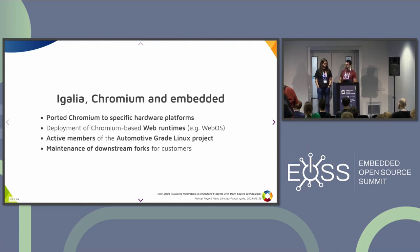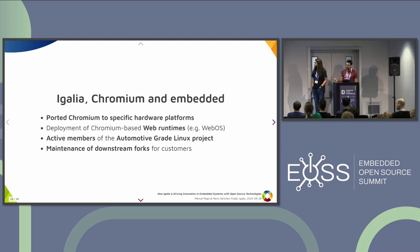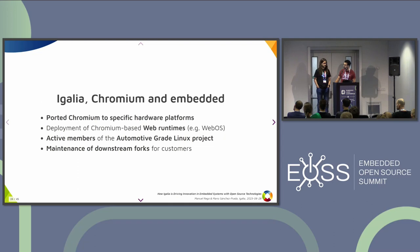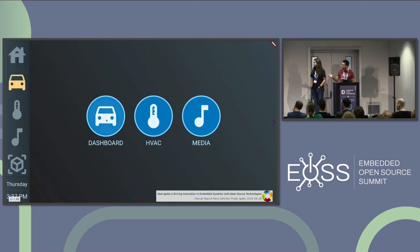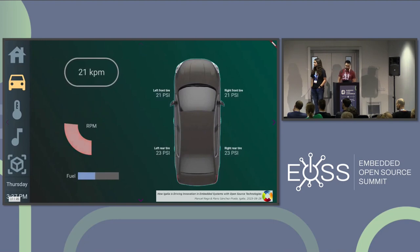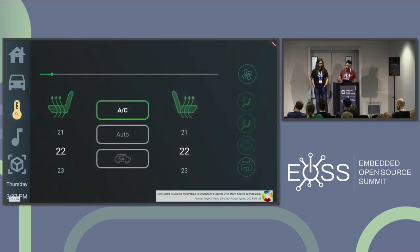For Igalia and embedded systems using Chromium, we have ported it to different hardware platforms for customers. We have deployed Chromium web runtimes in things like smart TVs with WebOS. We are active members of the Automotive Grade Linux project, where we maintain the Chromium layer. We also maintain downstream forks, since Chromium is a big project that moves very fast and the rebase process is a costly operation. The demo here shows a Flutter application running on top of Chromium as an infotainment system for a car, showing speed information and similar data.